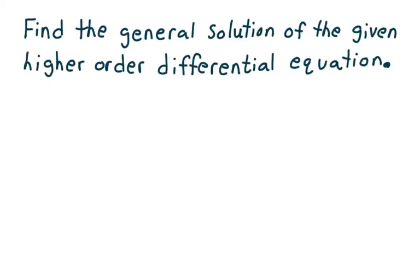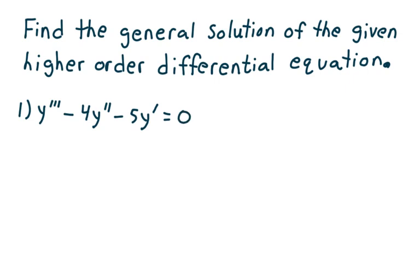The directions say to find the general solution of the given higher-order differential equation. Let's start with example 1. Suppose I'm given y triple prime minus 4y double prime minus 5y prime equals 0. This is a third-order differential equation, which means we need three linearly independent solutions to produce our general solution.